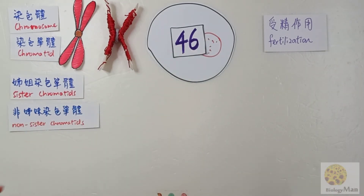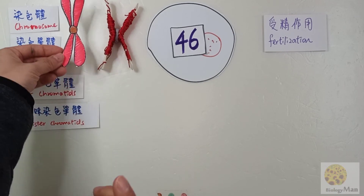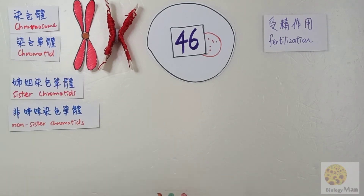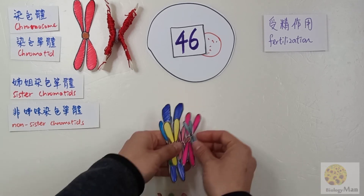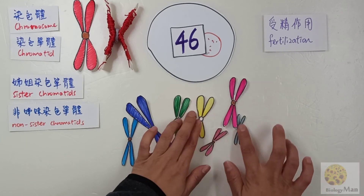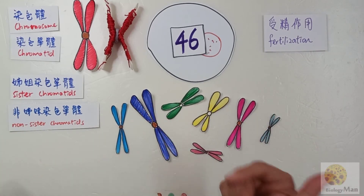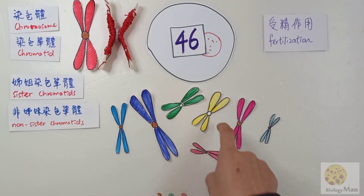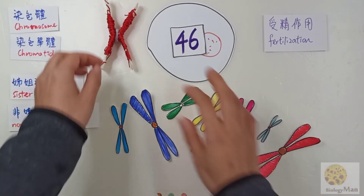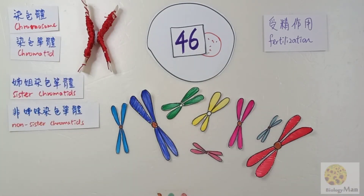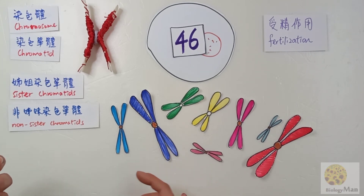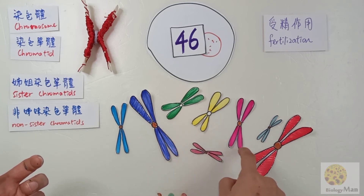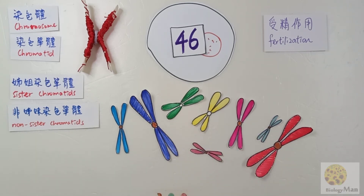After fertilization, this fertilized egg contains 46 chromosomes — remember that number, 46. When we consider the chromosomes inside a body cell, we consider all 46. Let me check your understanding: how many chromosomes are shown here? Let's count together: one, two, three, four, five, six, seven — seven plus this one is eight chromosomes. And how many chromatids? One chromosome contains two chromatids, so eight chromosomes gives us sixteen chromatids.